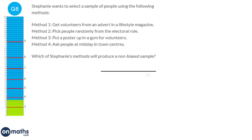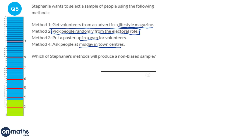When finding a sample you want everyone in the population to have an equal chance of being picked. Method 1 uses a lifestyle magazine which biases towards those who read it; a poster in a gym excludes people who don't go; midday in town centres skews towards retired people. The only method that gives everyone an equal chance is picking people randomly from the electoral roll — by far the most fair sample.